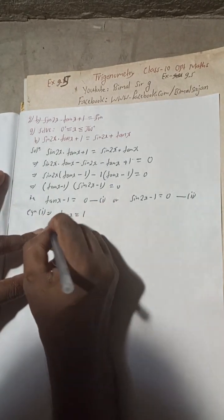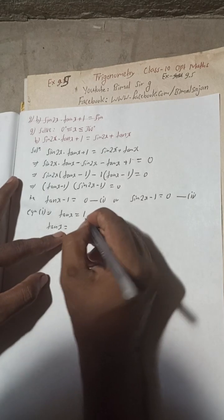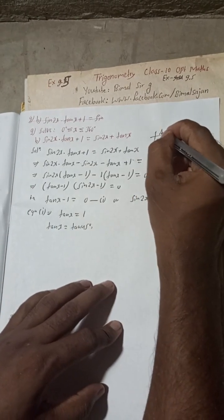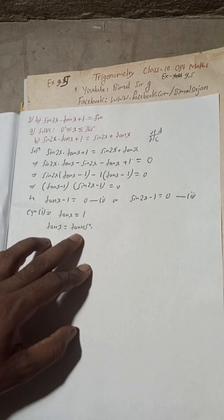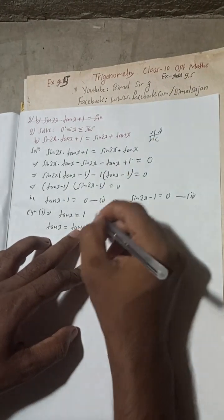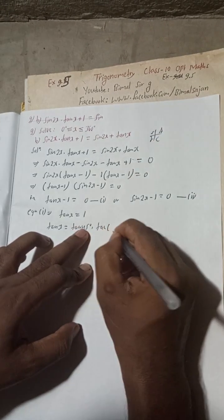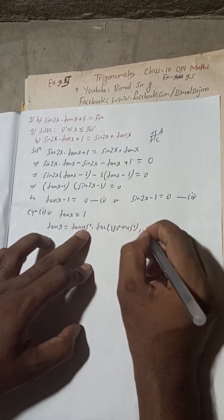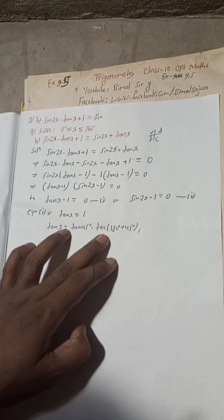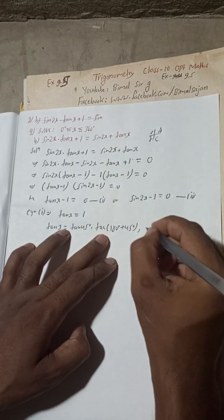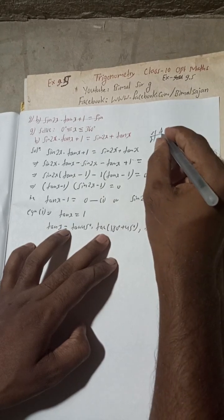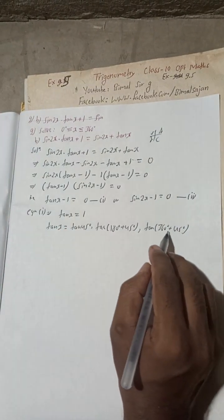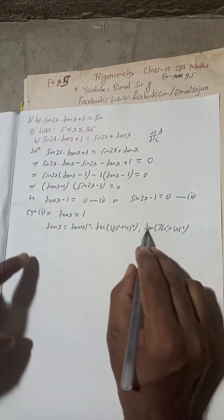tanx = 1. This value is 1 at tan 45°. Using the CAST rule: tangent is also positive in the third quadrant, so we get tan(180° + 45°) = tan 225°. In the fifth quadrant it would be tan(360° + 45°) = tan 405°, but that exceeds the given range of 360°, so we do not take that value.